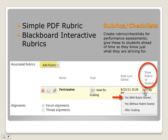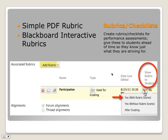You have the ability to show the rubric to students ahead of time. By default it's set to No, and I've changed that so that they can see it and that they can see it with the rubric score. This gives them the opportunity to see how their performance will be measured ahead of time.